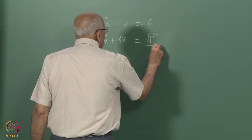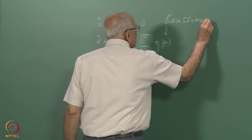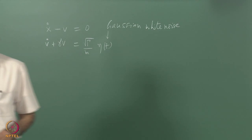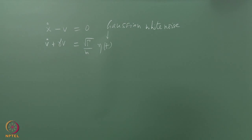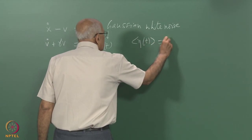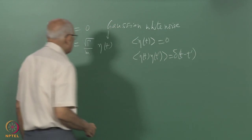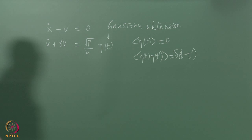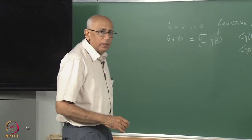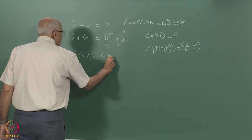This was equal to square root of gamma over m times eta of t, where this was Gaussian white noise — a delta-correlated Gaussian process, a stationary Markov process with unit strength: eta of t equals zero and eta(t) eta(t') equals delta(t minus t'). The question is: what is the corresponding Fokker-Planck equation satisfied by the conditional probability density in both x and v jointly — the equation for p(x, v, t | x_0, v_0 at time zero)?